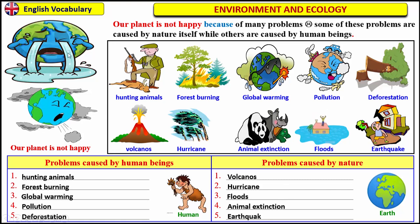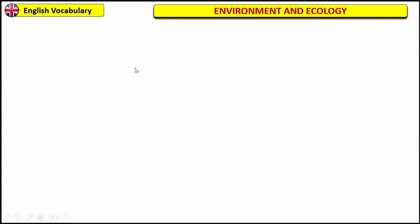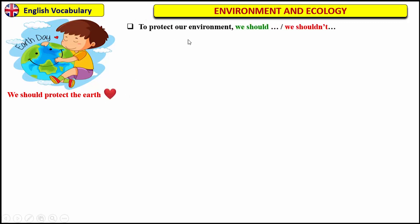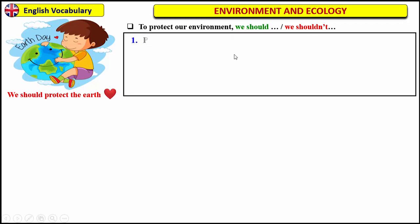Now, because the Earth is very sad and not very happy, we should do something to make it happy. We should protect our Earth. The question is, how can we protect the Earth? To protect the Earth and our environment in general, we should and we should not do some things.